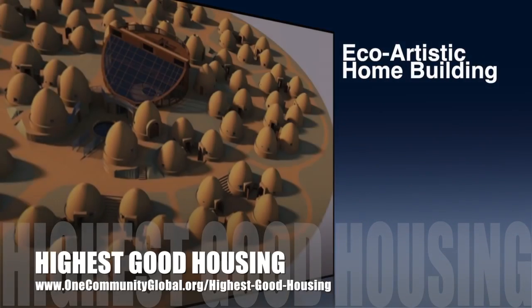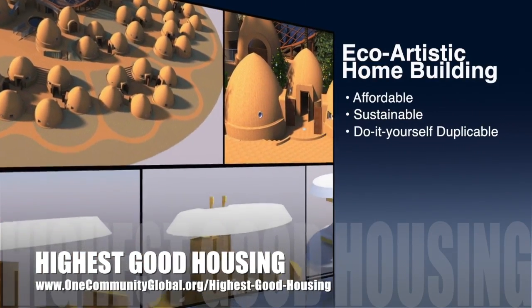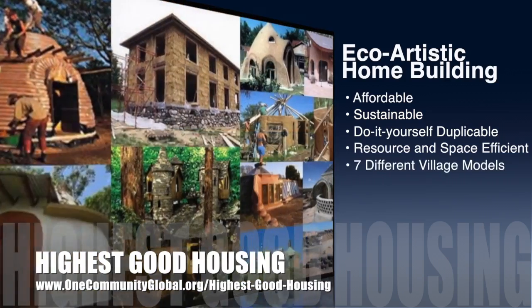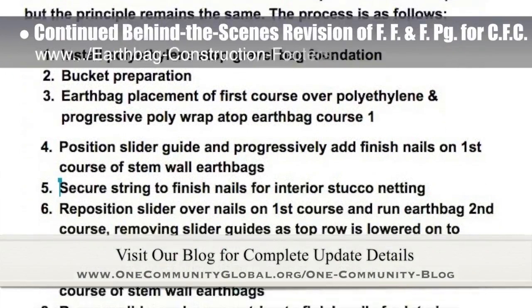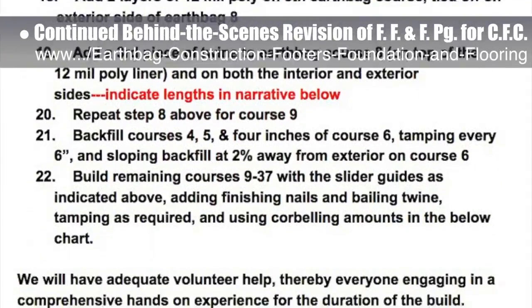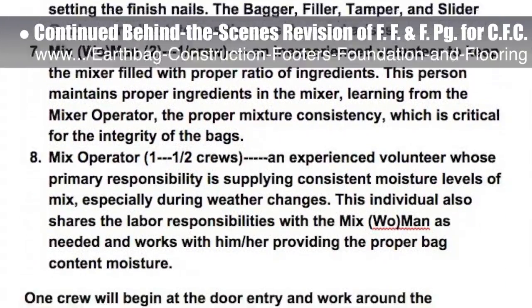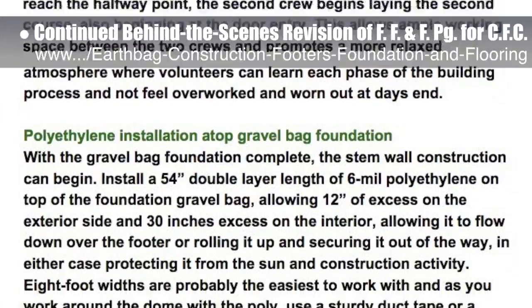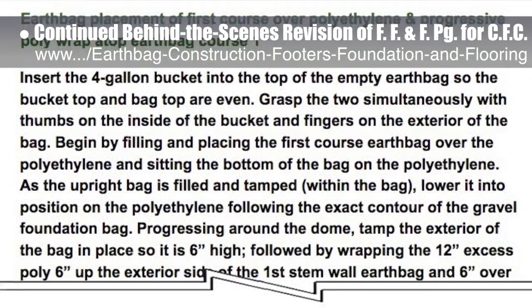OneCommunity's approach to Highest Good Housing is eco-artistic home building that is affordable, sustainable, do-it-yourself duplicable, resource and space efficient, and consists of seven different sustainably constructed village models. This last week, the core team working on Highest Good Housing put another ten hours into the behind-the-scenes revisions for the Footers, Foundation, and Flooring page and the crowdfunding campaign we're developing. This week's focus was finishing the stem wall details and slider parts and tools. Slider design will make building these domes cheaper, safer, and easier. We are about 60% complete with the total update of this section.